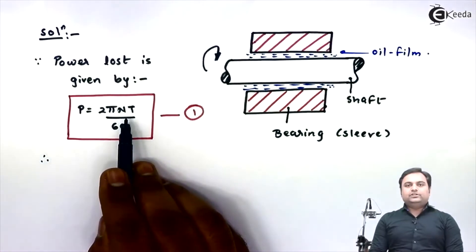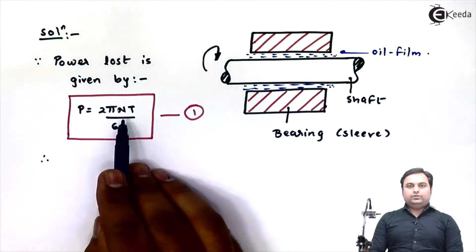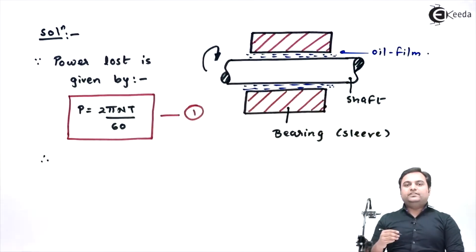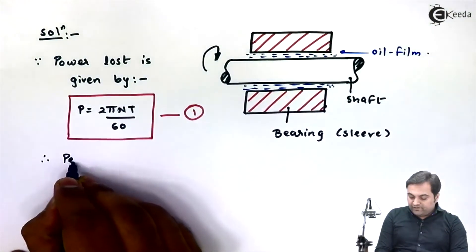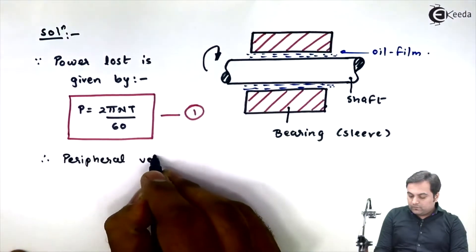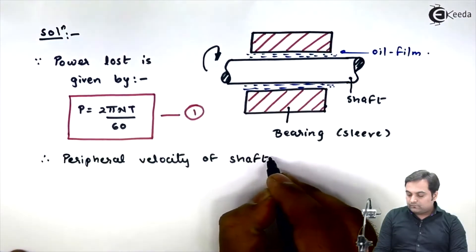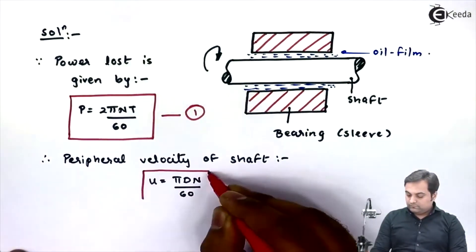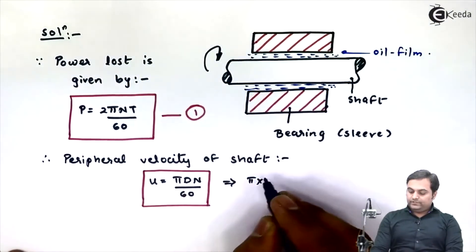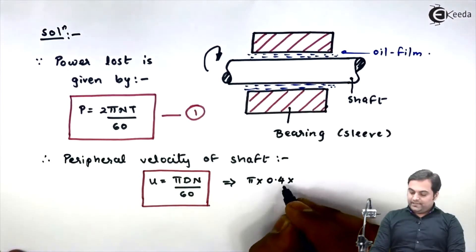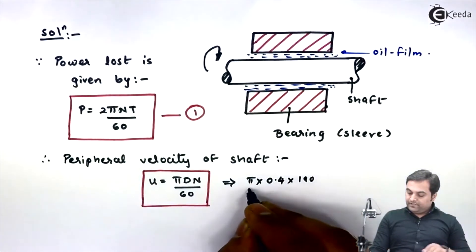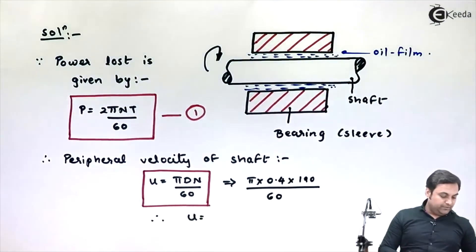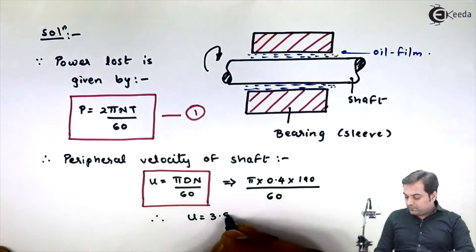If we are able to calculate torque, this problem is solved. In order to find torque, I'll first find the peripheral velocity of the shaft. The peripheral velocity is given by u = πDN / 60. Substituting values: pi × D (0.4 meter) × N (190 rpm) divided by 60. Calculating this gives u = 3.98 meter per second.